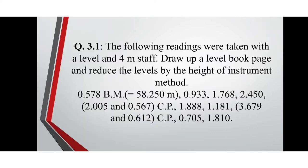So here is the question. The following readings were taken with a level and 4 meter staff. Draw a level book page and reduce the levels by the Height of Instrument Method. The following readings are given, starting with 0.578 with a benchmark of 58.250 meters. Two change points have been given.